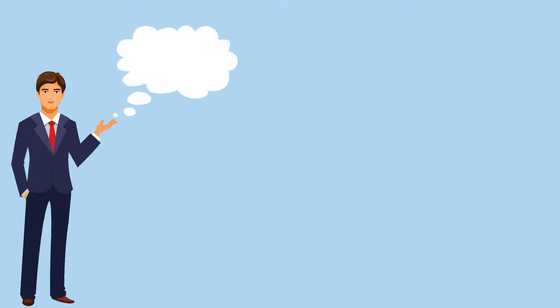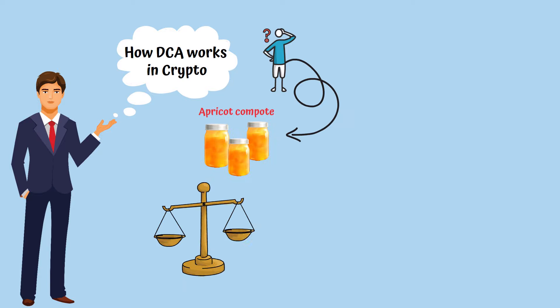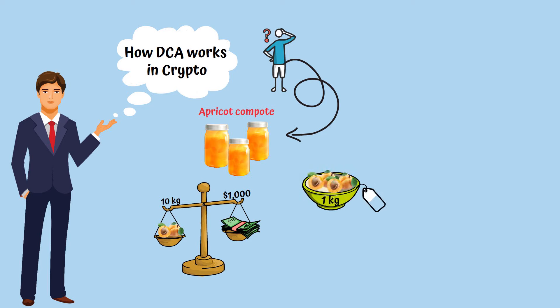In order to better understand how DCA works in crypto, let's make a simple analogy. Let's imagine that you want to make apricot compote. You can buy 10 pounds of apricots for $1,000 all at once, meaning 1 pound is worth $100.